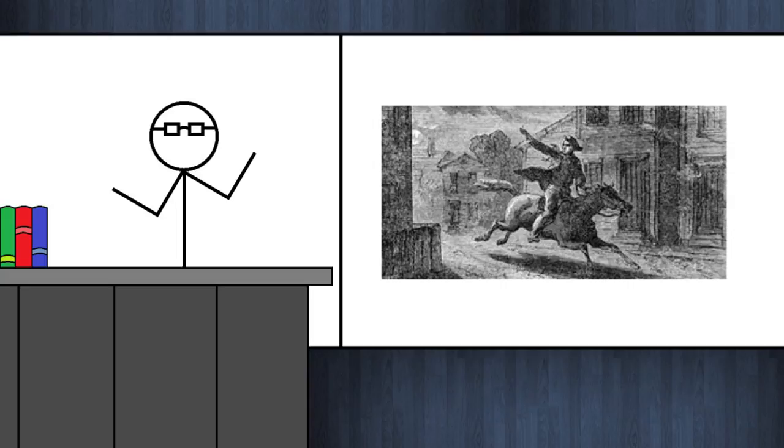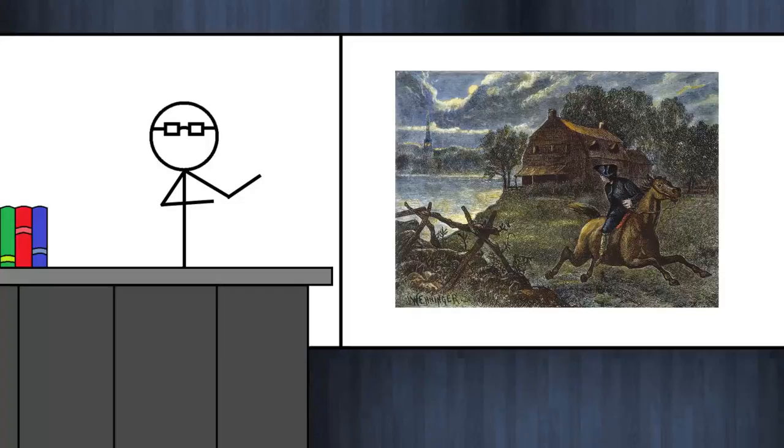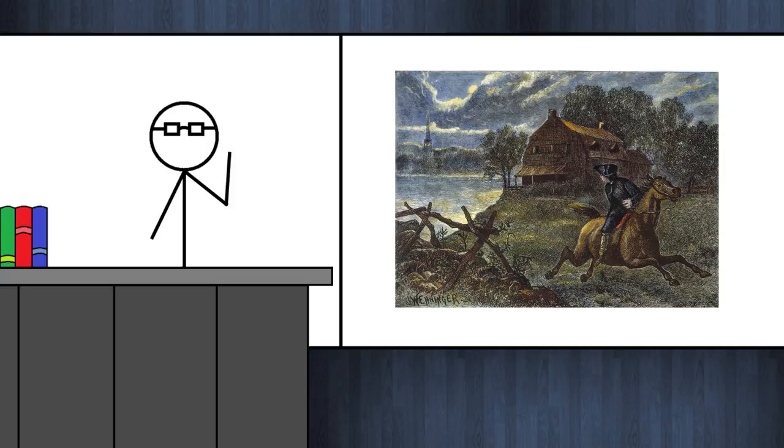To maximize the chances of a warning reaching the countryside, Warren decided to send one messenger by land and one by sea. Around 9 p.m., the doctor dispatched William Dawes on the riskier mission to ride through the checkpoint guarded by the British sentries and to take the longer land route. An hour later, he sent Paul Revere on his way to the Charles River and to the surrounding countryside. Their dispatchment was successful and helped prepare the surrounding area for the coming war.